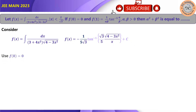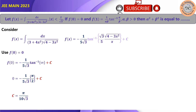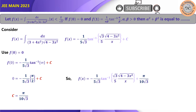Using the condition f(0) = 0: substituting x = 0 gives tan⁻¹(∞) = π/2, so 0 = −(1/(5√3)) · (π/2) + C, which gives C = π/(10√3). Therefore, f(x) = −(1/(5√3)) · tan⁻¹(√3/5 · √(4 − 3x²)/x) + π/(10√3).